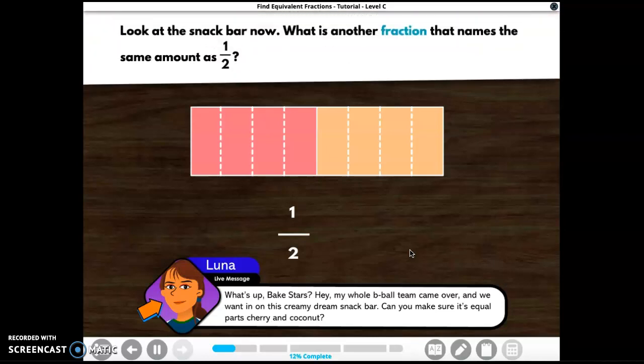Look at the snack bar now. What is another fraction that names the same amount as one half? Well, remember we said that this is all one and this is all one, right? This was one half. This is one half cherry, one half coconut. So how many equal parts are there now when they folded it that extra time? One, two, three, four, five, six, seven, eight equal parts. And how many are cherry? One, two, three, four.